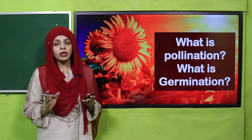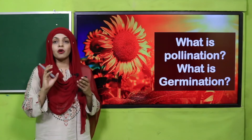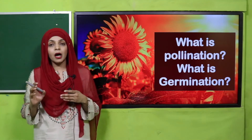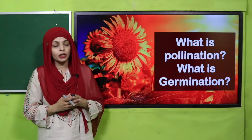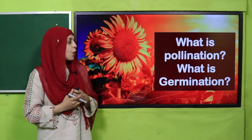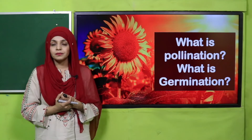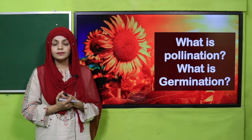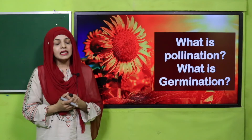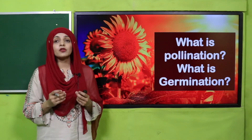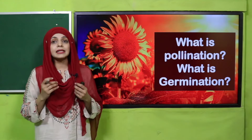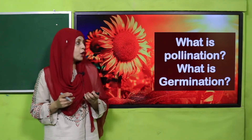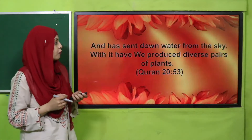Very good. The transfer of the pollens from the anther to the sticky stigma of the carpel is called pollination. Now, what is germination? Yes — the development of a small plant from a seed is called germination. Very good.